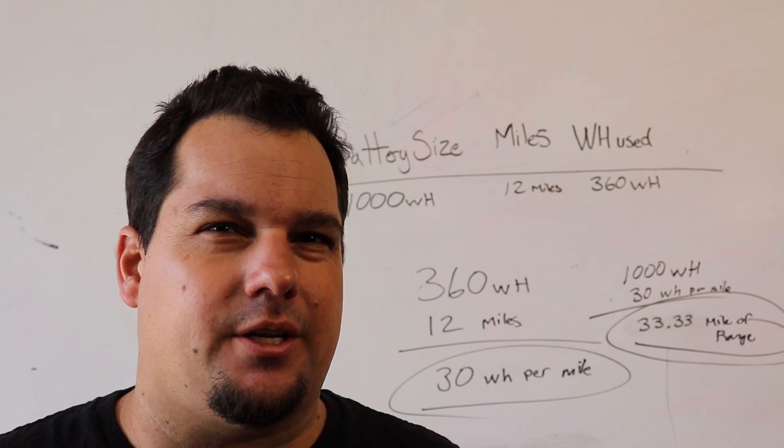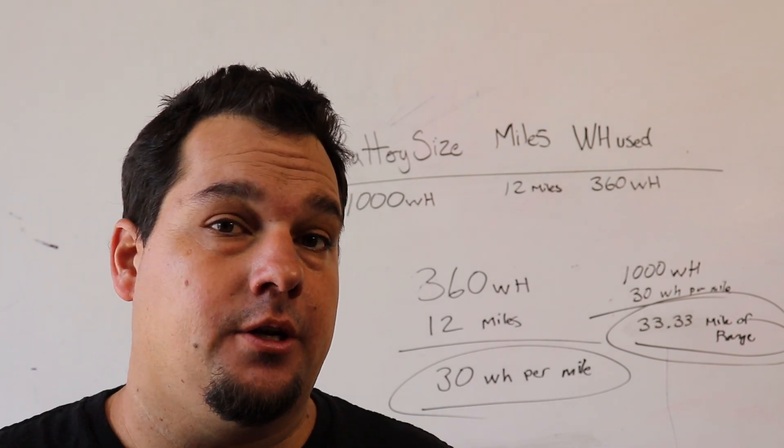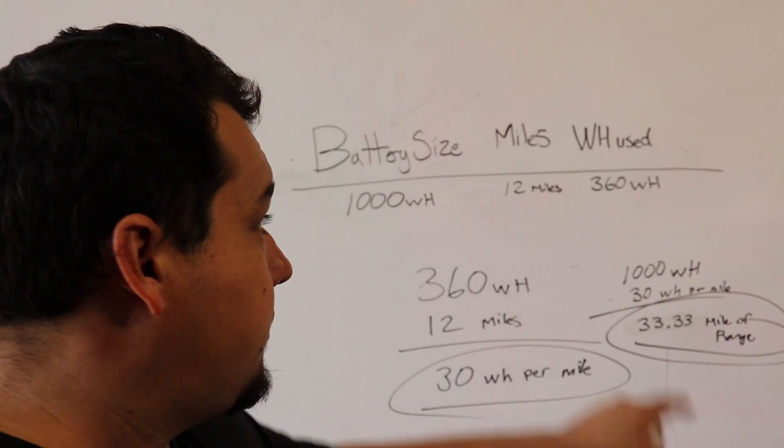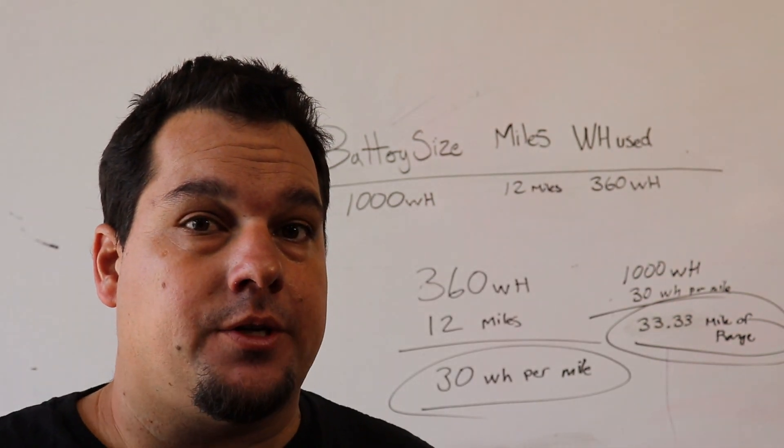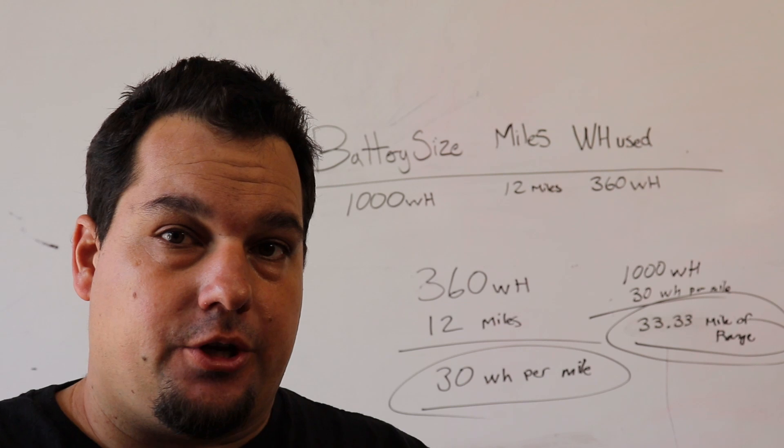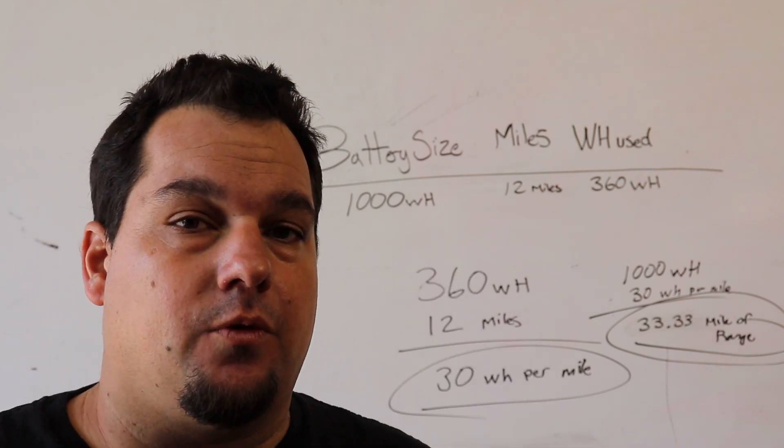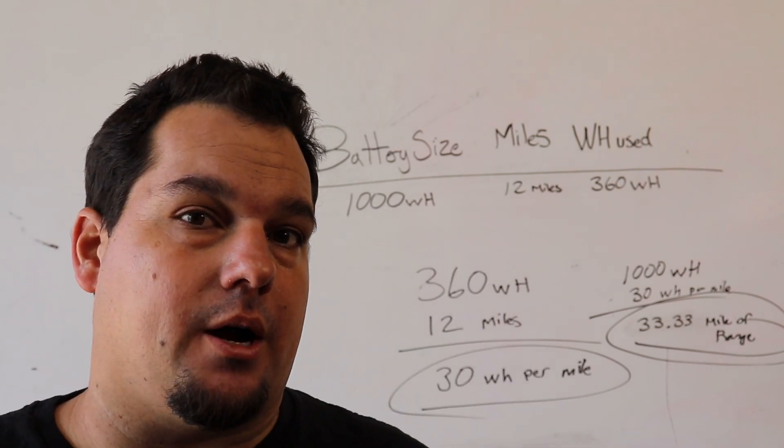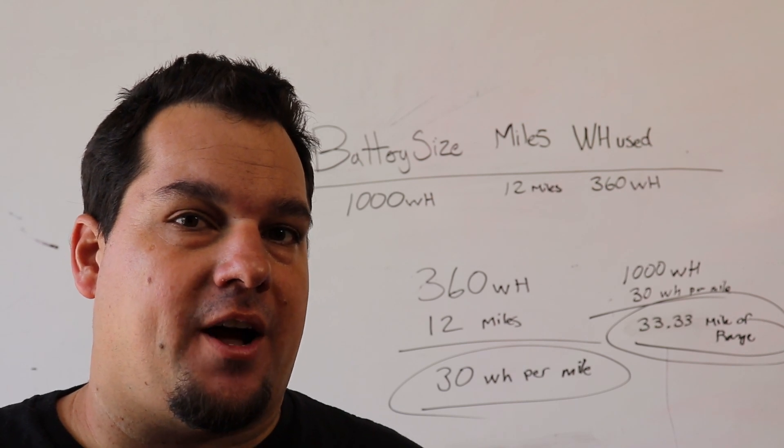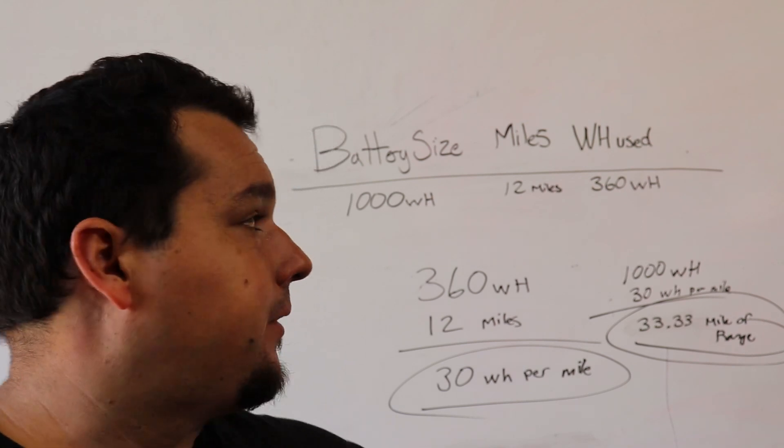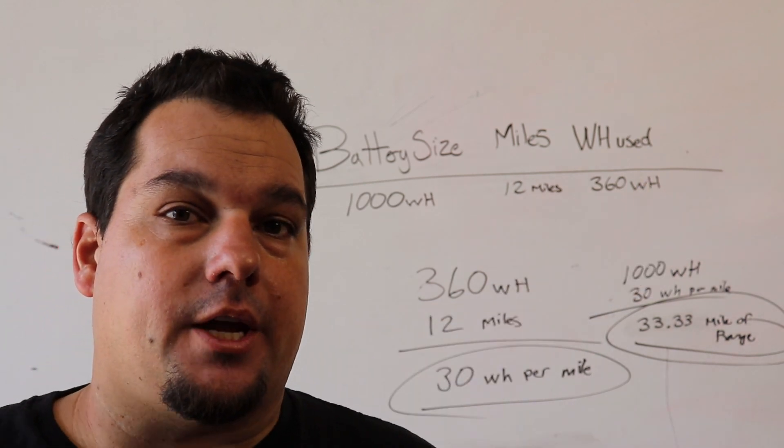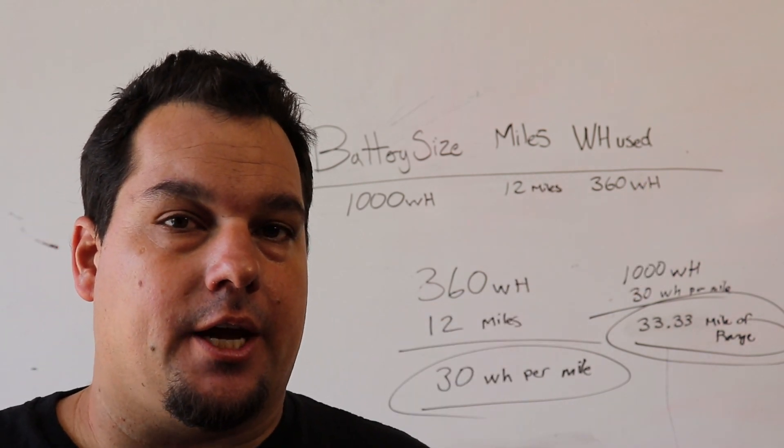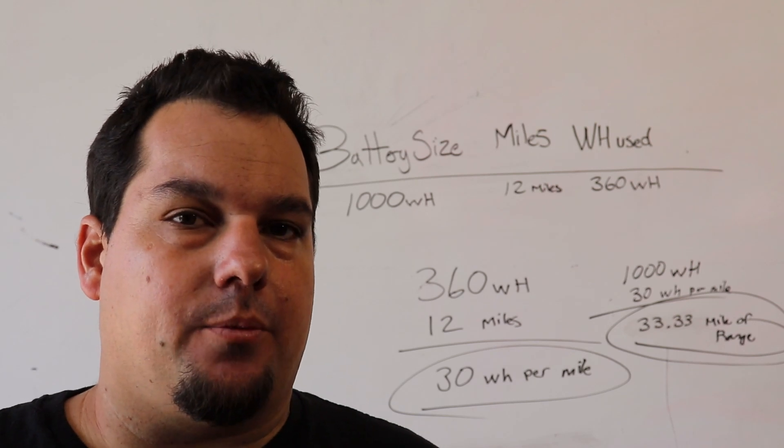So basically what happens is, the way that I got that 360 watt hours is my actual usage on the kilowatt meter was 424 watt hours. And then I timesed it by 0.85 or 85 percent, which gives me roughly 360 watt hours. That's how you get that, and that's how you get that fairly accurate at that point.